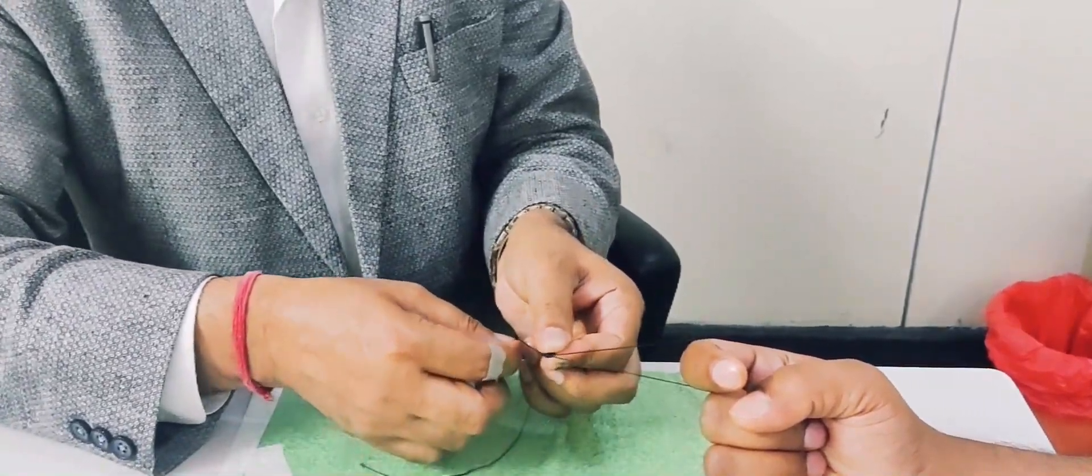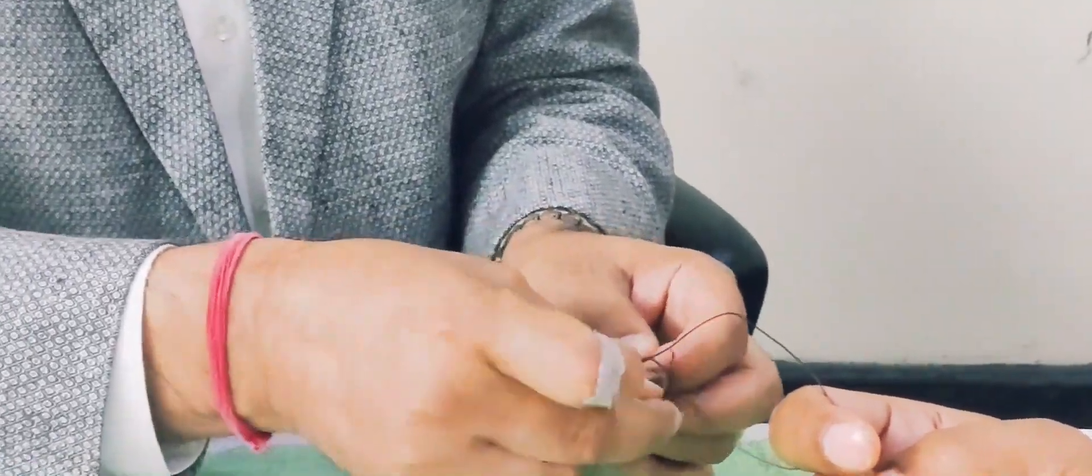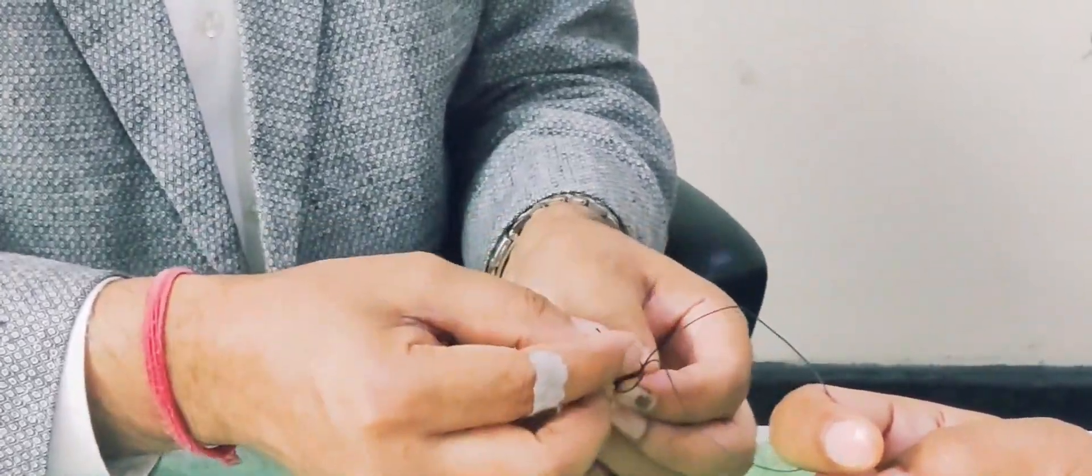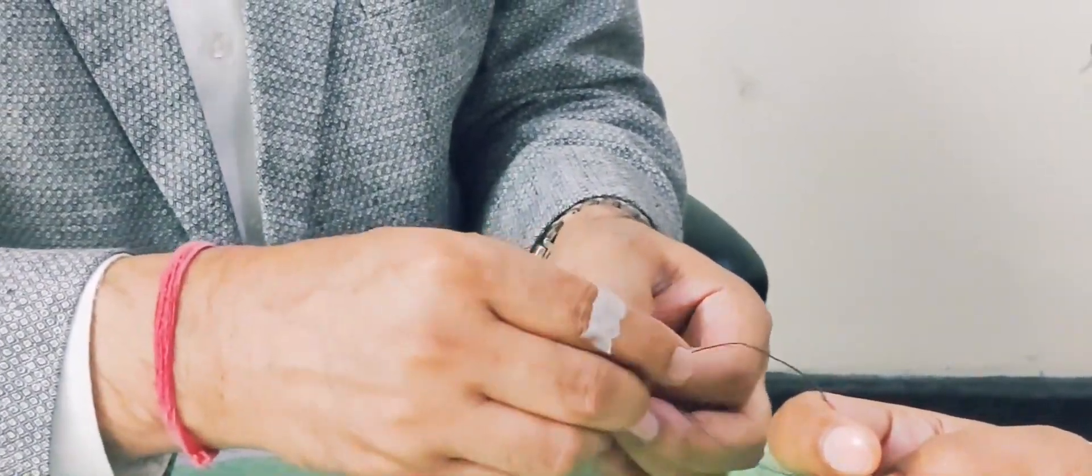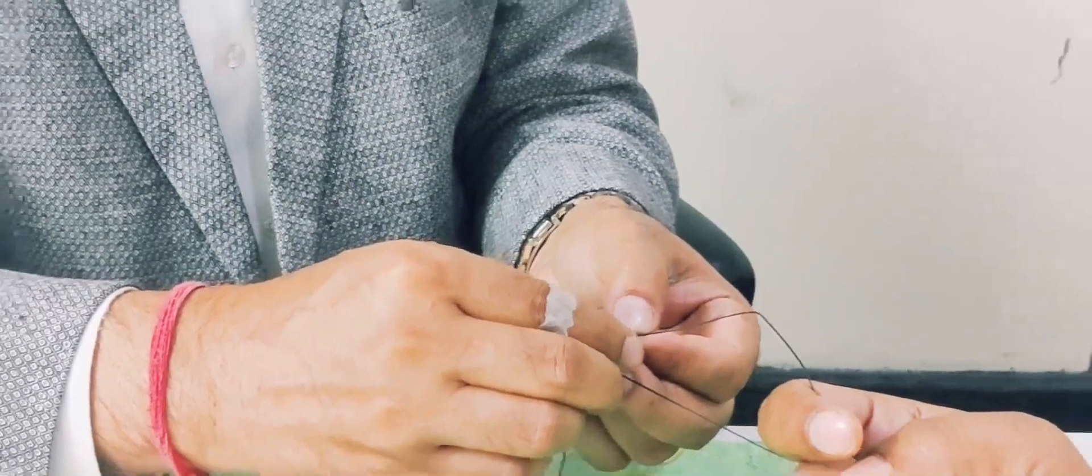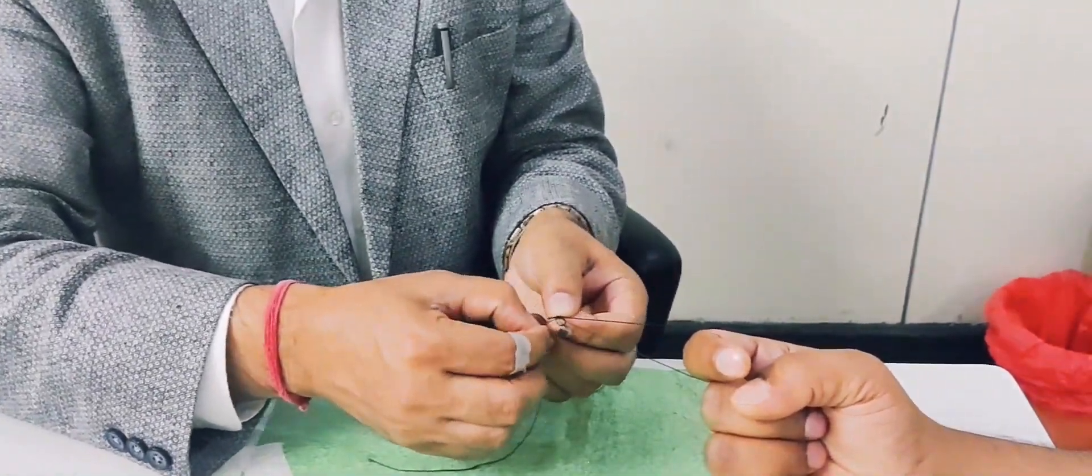And after this, this will be the last full loop. And after that last full loop, there will be a last half knot. So you can see there are three half knots and there are three full loops.